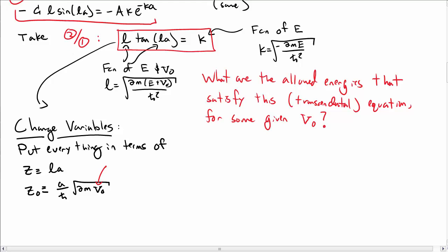Remember, V naught is a positive number, even though the square well is negative. The depth of the square well is minus V naught.